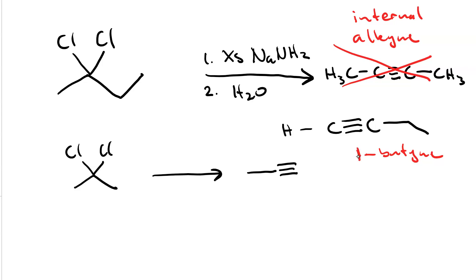And the reason we get the 1-butyne is because the excess would drive us toward eliminating these beta protons, because then we could make the butynide ion and then we'd work it up with water. So this two-step mechanism with excess sodium amide followed by water favors forming terminal alkynes.